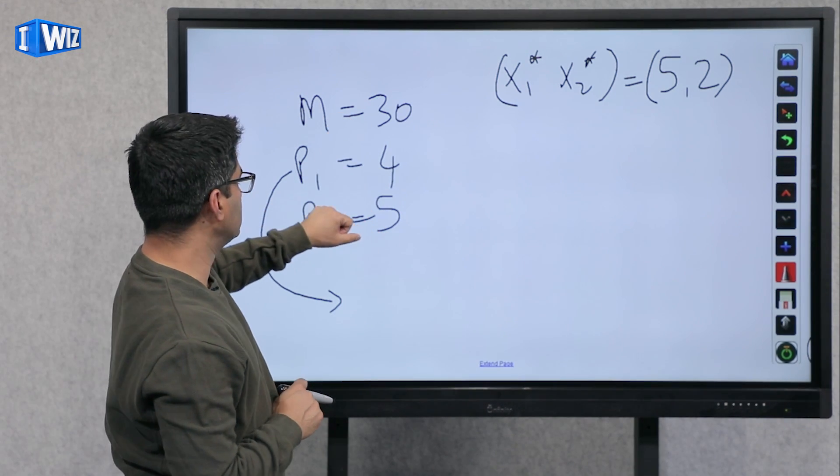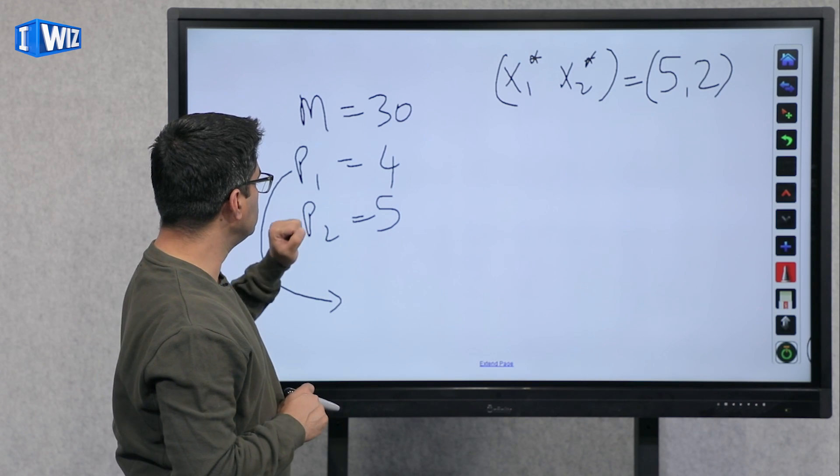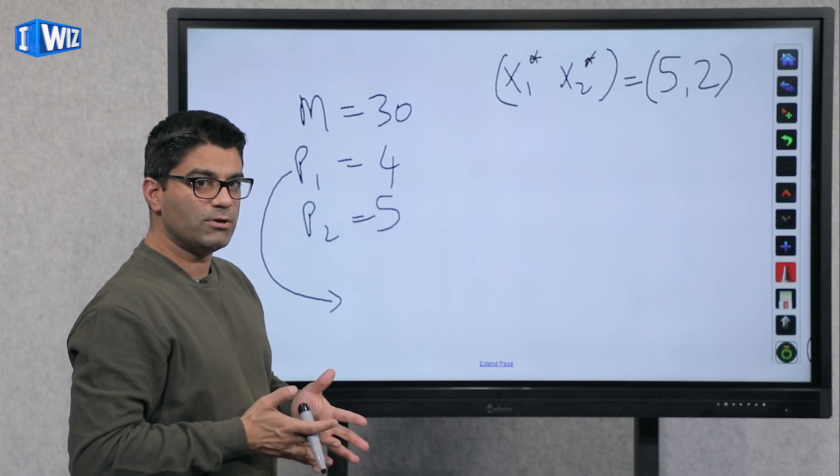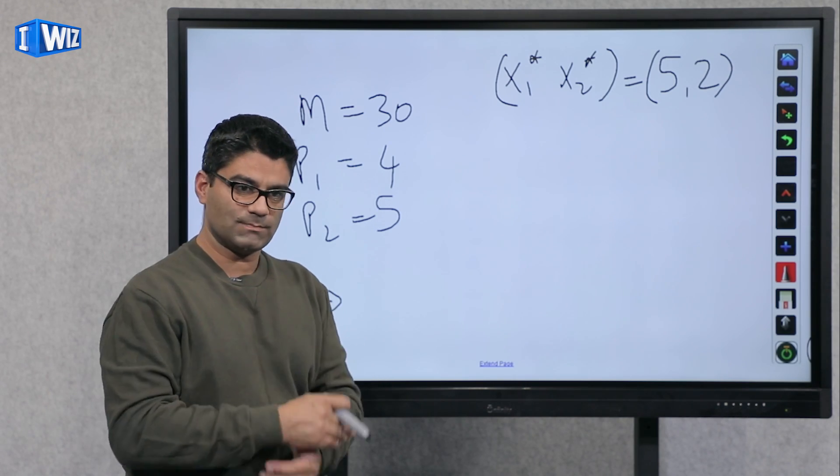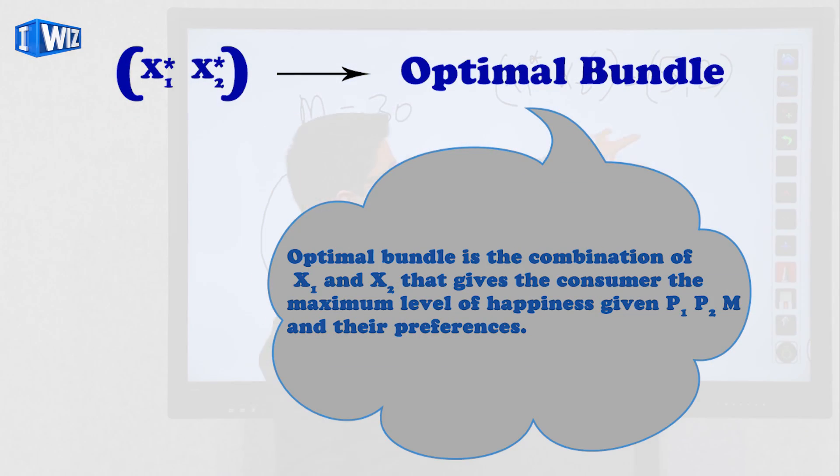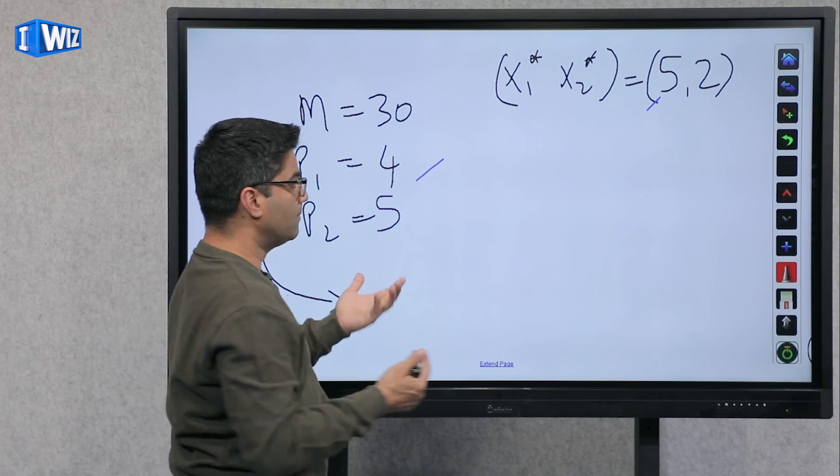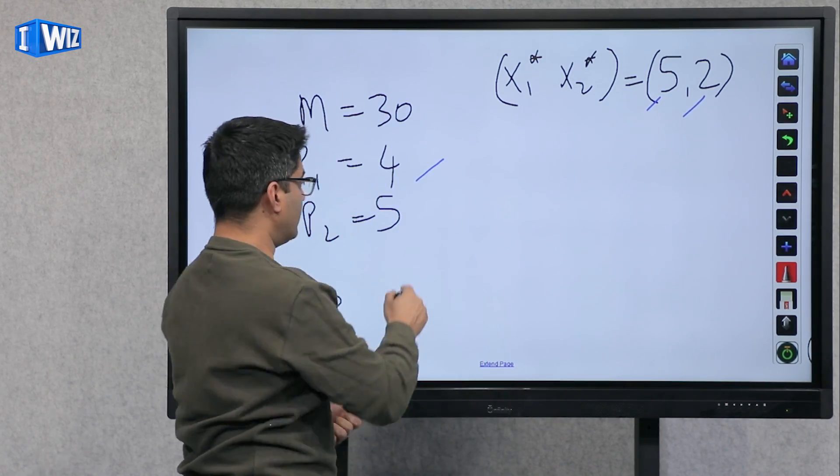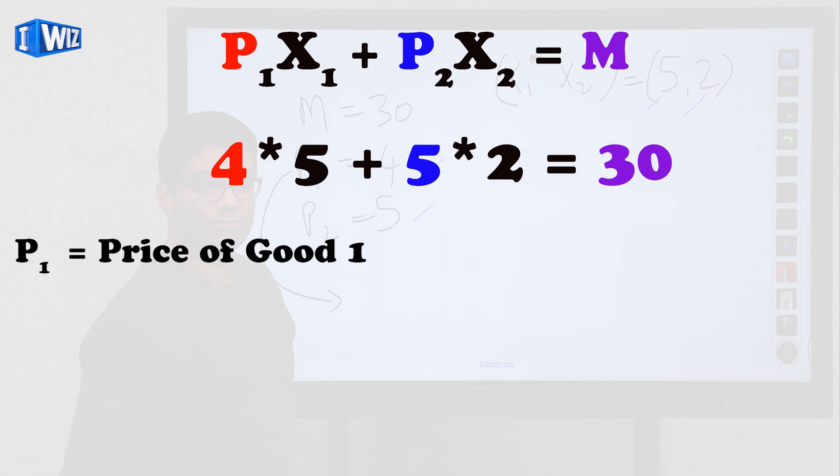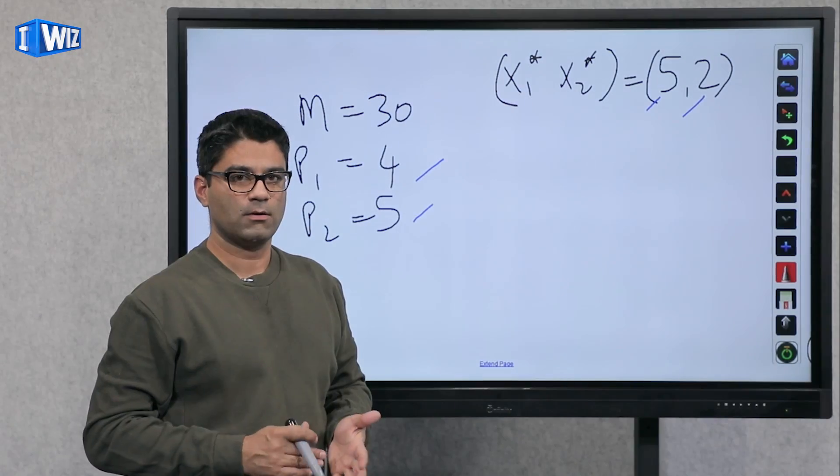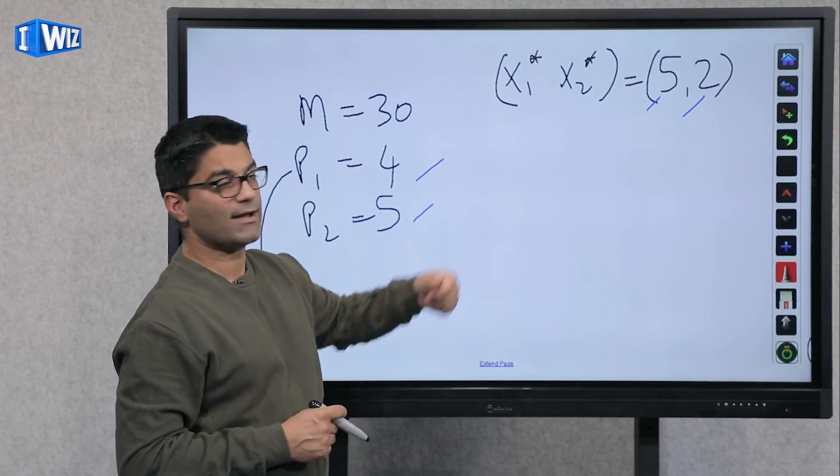So let's say income is $30, price of good one is four, price of good two is five, and we are currently the optimal bundle that we choose based on all the parameters, tastes and preferences, maximizing utility, is five and two. And just to make sure, five times four gives, so that's good one, times how much good one is four, that's 20, plus how many of good two we are buying times five, which is the price of good two, is 10. So 20 plus 10 gives you 30, which means we are optimizing our behavior. We're spending everything we can, and we're maximizing our utility.